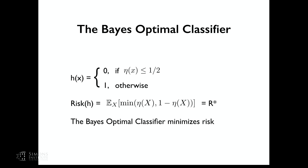Why don't we always use the Bayes optimal? Because to have it, you need to know what eta is, but eta is a distribution quantity and you don't know it. That's why we don't have it, but we want it.